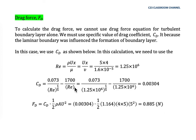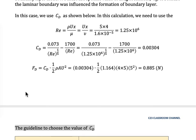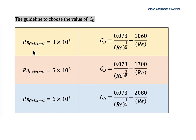The special drag coefficient is determined empirically and is not derived in this syllabus. The choice of C_D depends on the critical Reynolds number: for Re_critical = 3 × 10⁵, 5 × 10⁵, or 6 × 10⁵, different C_D formulas apply accordingly.